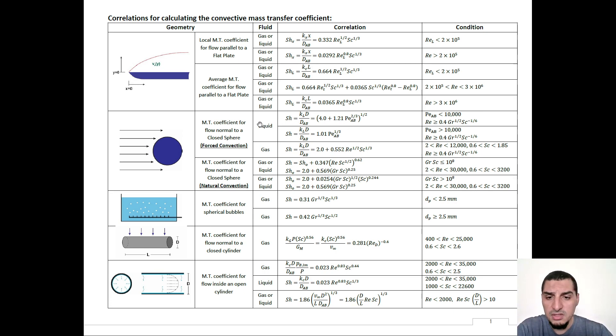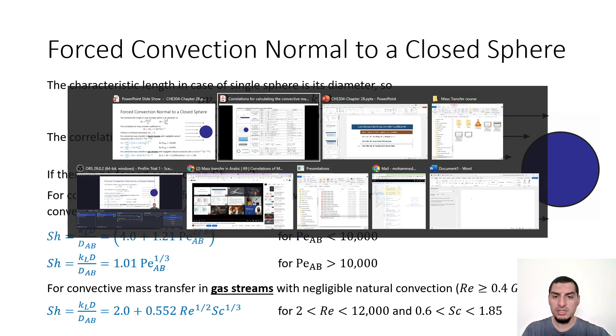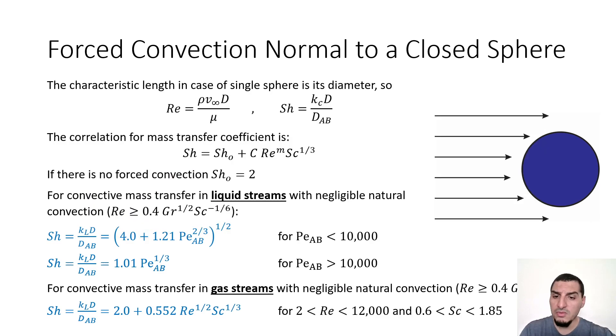And the same here, there are equations for sphere. Some are for forced convection, some are for natural convection, some are for liquids and some are for gases. And these are the conditions under which you can use the equation. I believe this is the summary of the whole chapter, just to know these equations. Sometimes there's some information you need to check from the textbook, but the majority of the information is already here. I'll put a link to this file in the description of the video.